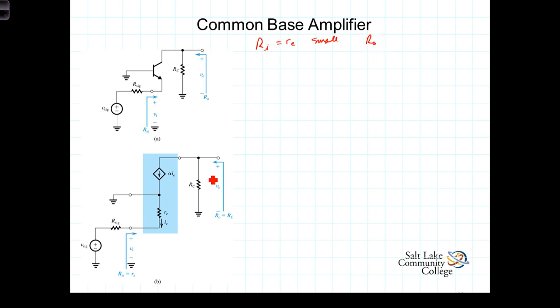R-out, also from observation, we can see that the resistance looking back into here is just R-sub-C. And R-sub-C, as we're going to see, is proportional to the gain of this amplifier.